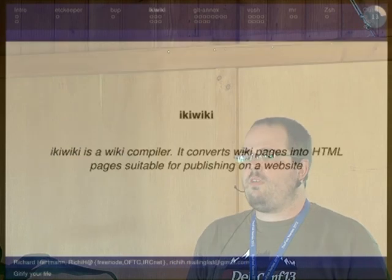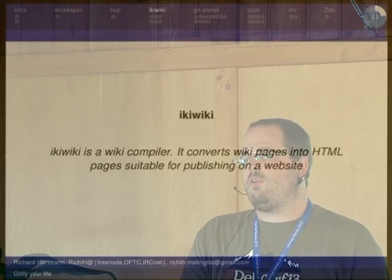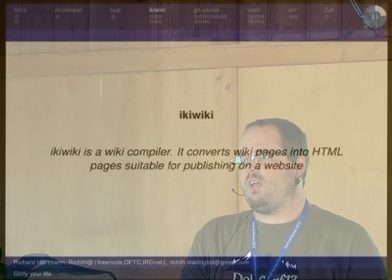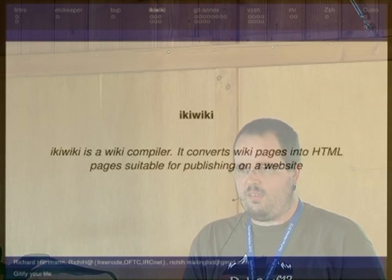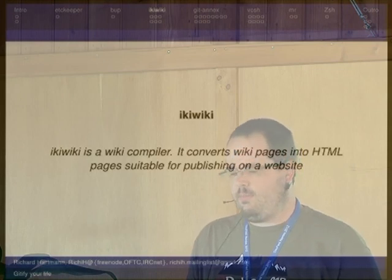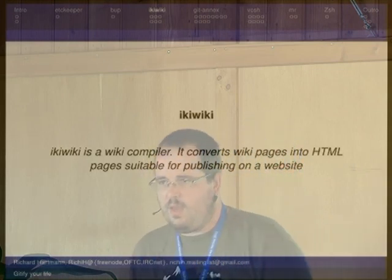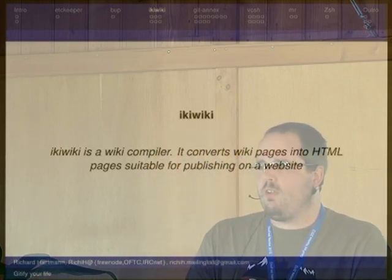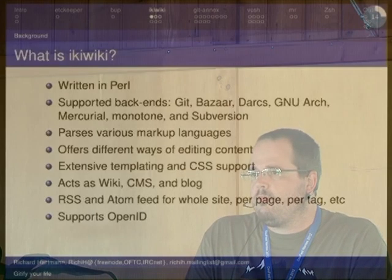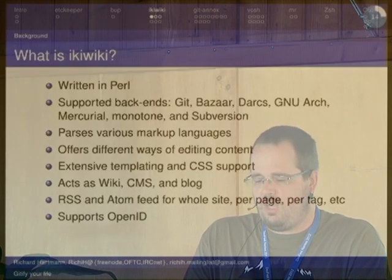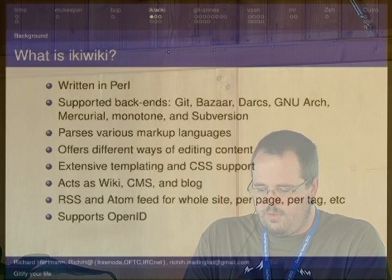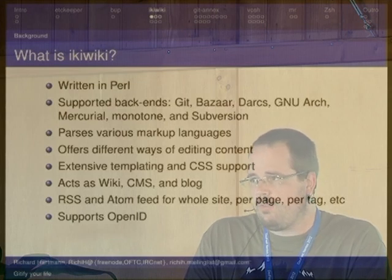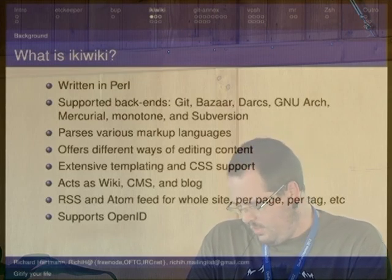For your websites, wikis, or whatever, there is Ikiwiki. Ikiwiki is a wiki compiler, as the name implies, and it converts various different files into HTML files. It's written in Perl, it supports various backends — most of the ones you can possibly think of.